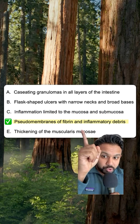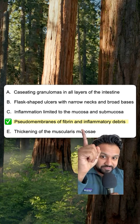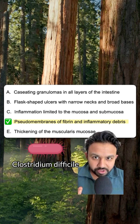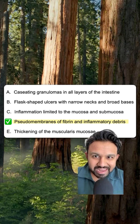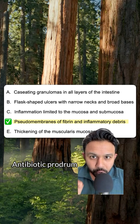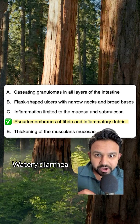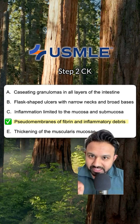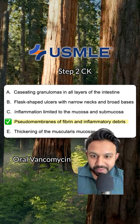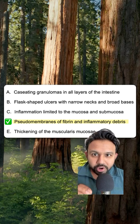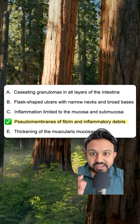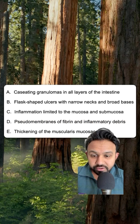Answer choice D: pseudomembranes of fibrin and inflammatory debris. This refers to Clostridium difficile. The USMLE loves to sneak in an antibiotic prodrome with watery diarrhea and leukocytosis. For USMLE Step 2CK, you need to know the next best step in management: oral vancomycin.